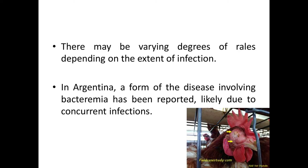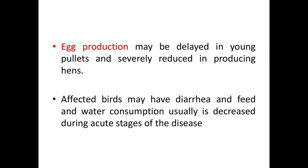There may be varying degrees of rales depending on the extent of infection. In Argentina, a form of the disease involving bacteremia has been reported, likely due to concurrent infections. Egg production may be delayed in young pullets and severely reduced in producing hens. Affected birds may have diarrhea, and feed and water consumption is usually decreased during acute stages of the disease.